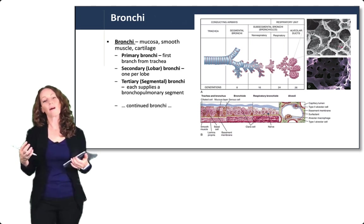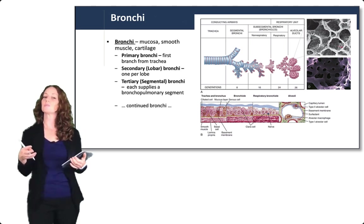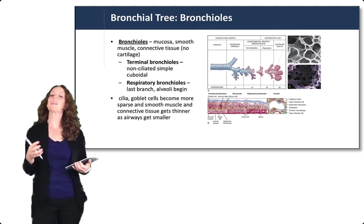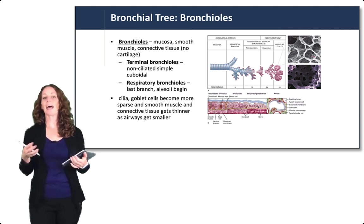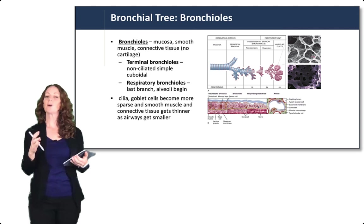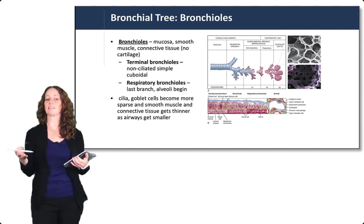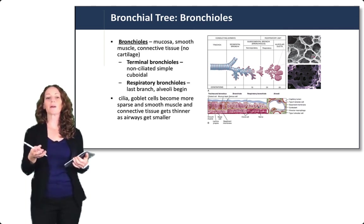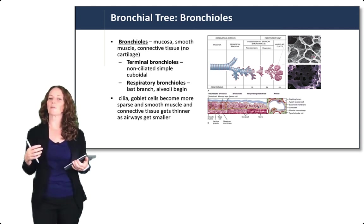At the level of the bronchi, cartilage is present, but as the bronchi branch into smaller and smaller bronchioles, the cartilage disappears. The bronchioles are made up of smooth muscle and connective tissue and are lined by the respiratory mucosa. The terminal bronchioles are the final smallest branch before the region that contains alveoli. The cilia and goblet cells become more and more sparse, and the smooth muscle and connective tissue get thinner as the airways get smaller.